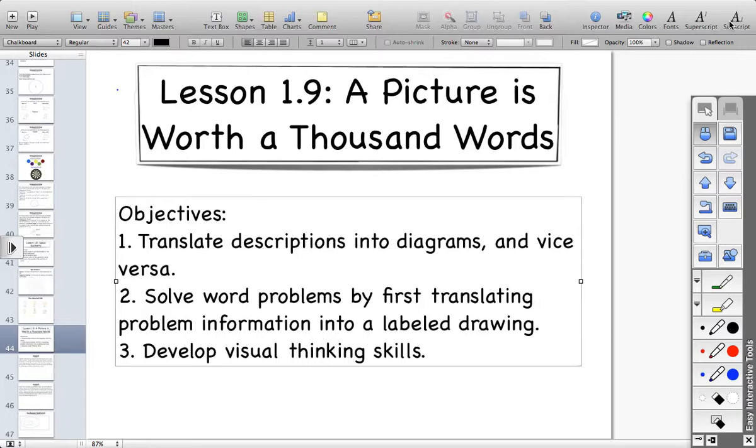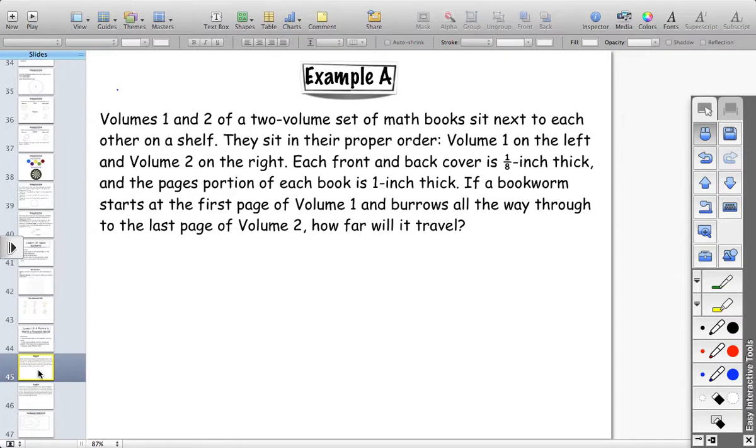Alright, so let's take a look at a couple of word problem examples. There's going to be a lot of pausing that you'll need to do in order to solve some of these things, so be prepared for that. Alright, our first example says Volumes 1 and 2 of a two-volume set of math books sit next to each other on a shelf. They sit in their proper order. Volume 1 is on the left, and Volume 2 is on the right. Each front and back cover is 1/8 inch thick,